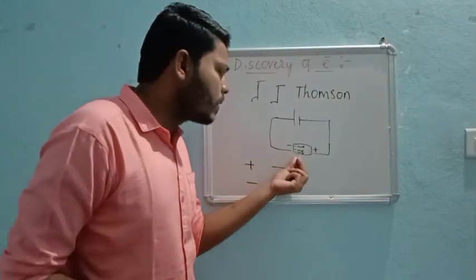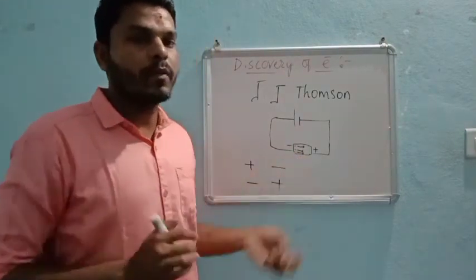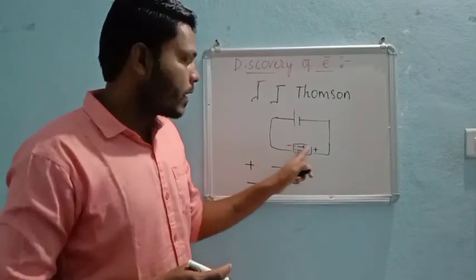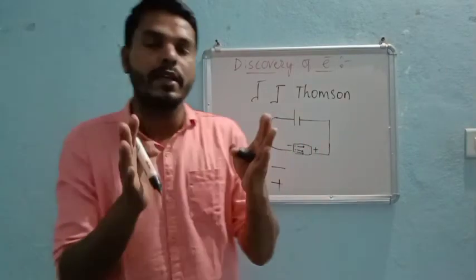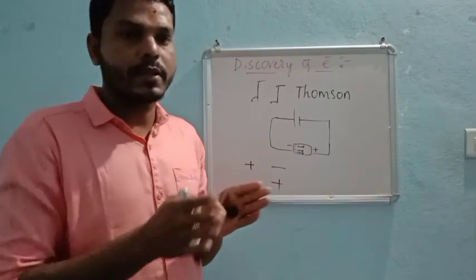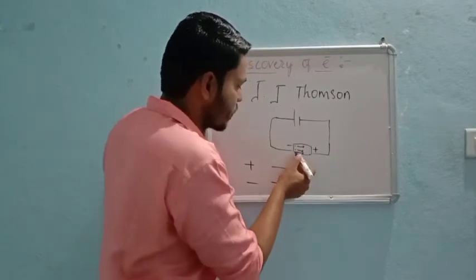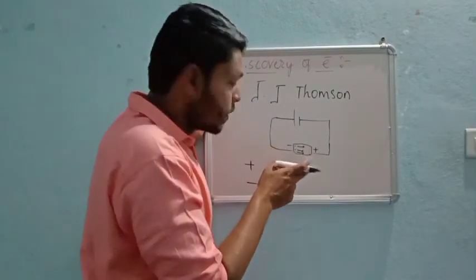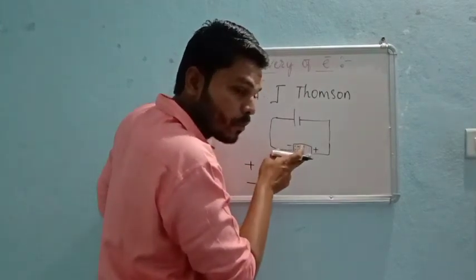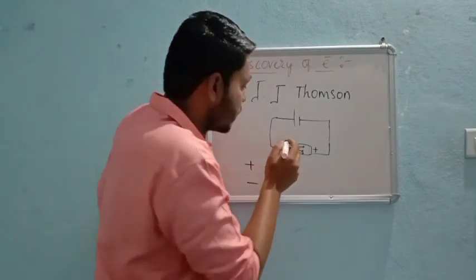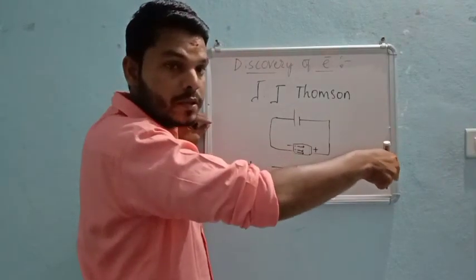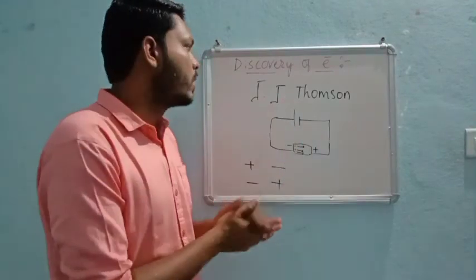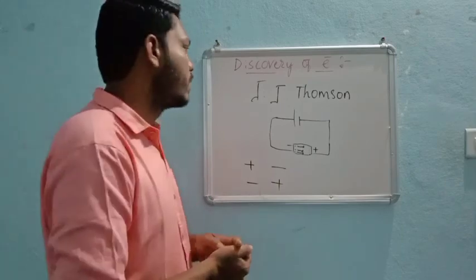We know that positive attracts negative. So J.J. Thomson observed that some particles were moving towards the positive side, which means those particles must be carrying a negative charge. That is how the electron was discovered. In the next class, we will go into detail about the discharge tube, the discovery of the proton, and later the models of the atom. Thank you.